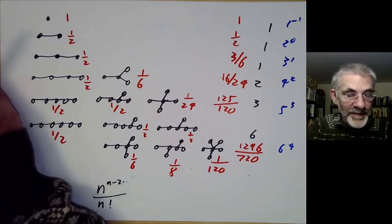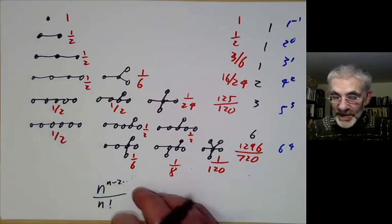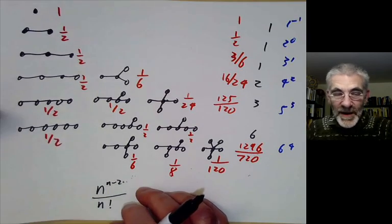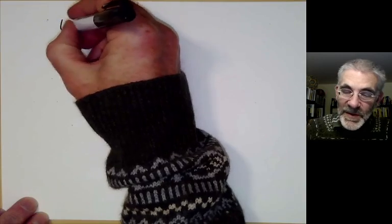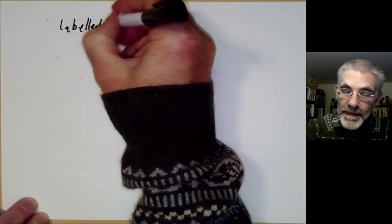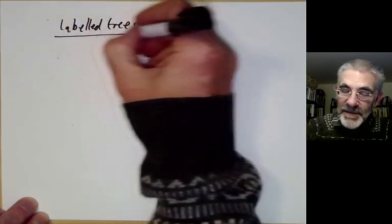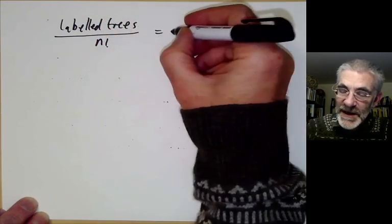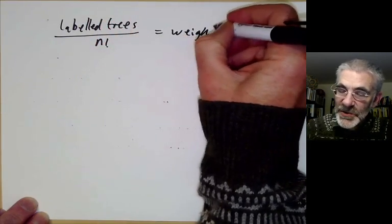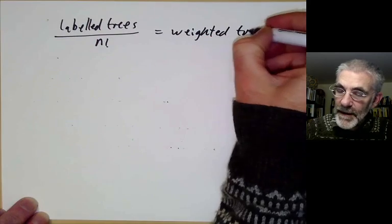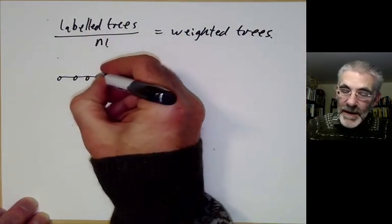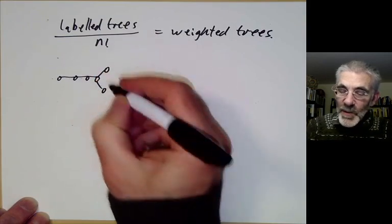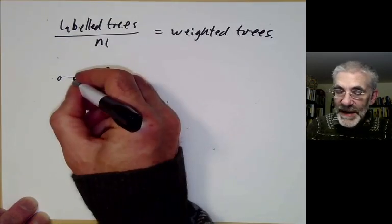Now let's explain how to derive this formula. First of all, it's slightly easier to count labeled trees and divide the number by n factorial. This turns out to be the same as counting weighted trees. So what's a labeled tree? A labeled tree is just a tree where you label all its points by numbers from 1 to n.